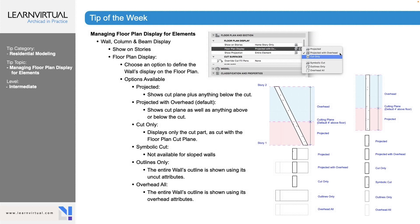Here's another good example for walls showing the sloped or slanted wall — how it appears in projected, projected with overhead, cut only, outlines only, and overhead all, and how the wall shows when cut for projected, projected with overhead, cut only, symbolic cut, outlines only, and overhead all. The default in ARCHICAD is a four-foot cut, so everything shows below that four-foot cut and nothing above it, though you can move that using the display setting.